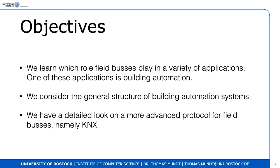The objectives are: we learn which role field buses play in a variety of applications, one of which is building automation. Field buses can also be used in vehicular networks and in industrial networks to control large machines, robots, and so on. We consider the general structure of building automation systems — something called an automation pyramid. We also have a detailed look at a more advanced protocol for field buses, namely KNX.